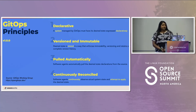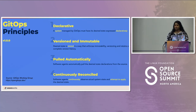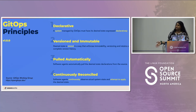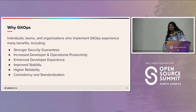Software agents automatically pull the desired state declarations from the source and continuously observe actual system state and attempt to apply the desired state. In this case, we'll be talking about Flux as that operator. You have that continuously listening, and whatever's written in code is what's actually deployed out in Kubernetes or elsewhere.